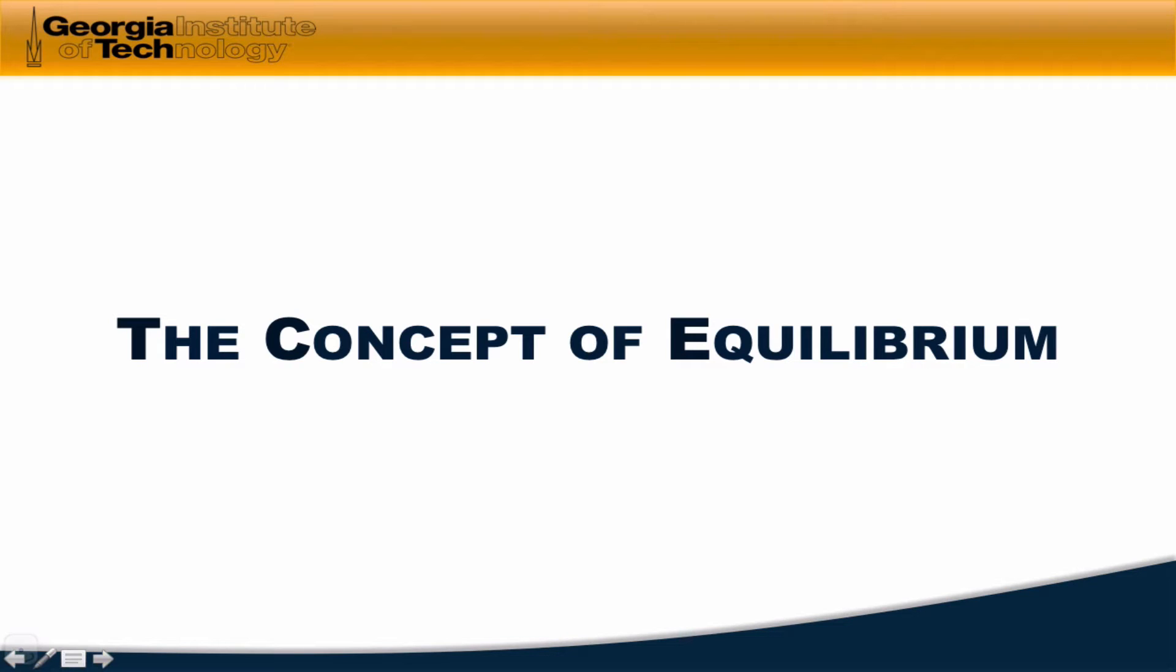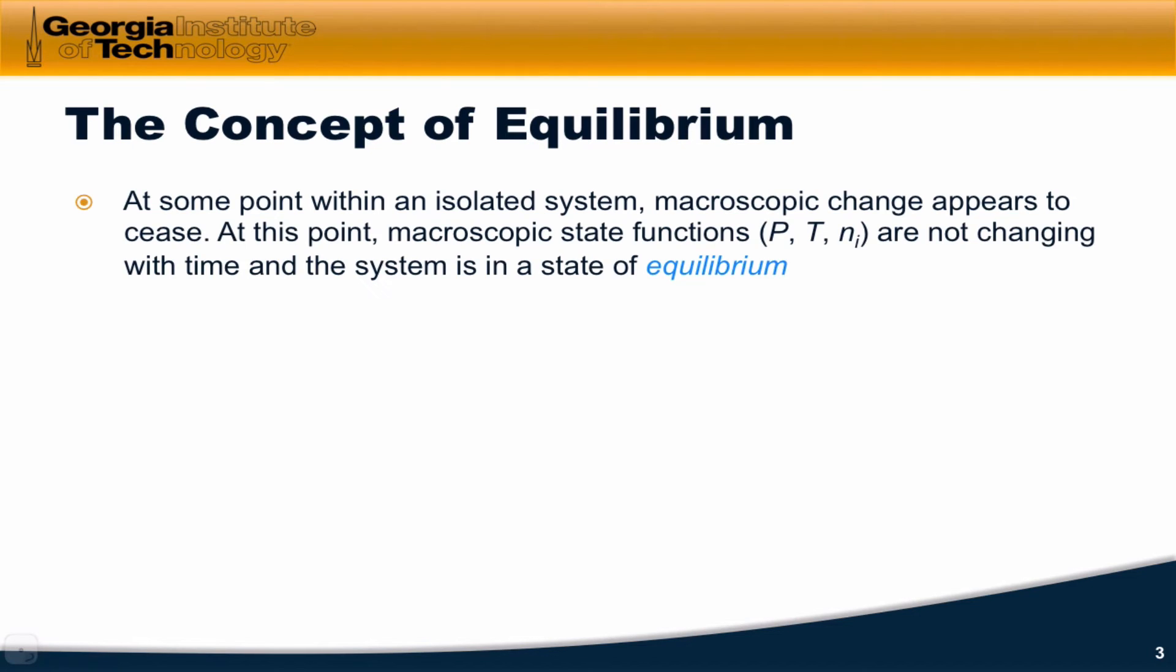If you understand the concept of equilibrium on a deep level, you really appreciate how we think about thermodynamic systems, and in particular, why and how we can ignore the microscopic level and focus only on macroscopic state functions. What we'll notice is within an isolated system, macroscopic change continues to occur until a certain point at which macroscopic change appears to cease.